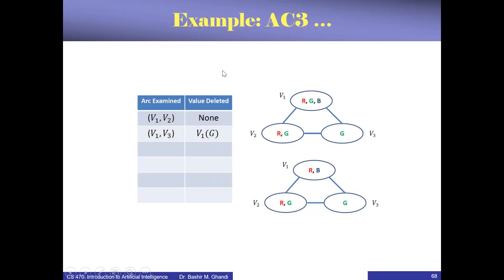AC3 stores all three arcs — (V1,V2), (V2,V3), and (V1,V3) — in the queue and dequeues them one by one, checking for inconsistency. Suppose we dequeue arc (V1,V2): if we take any value in V1's domain, can we find a corresponding value in V2? Yes — if we take R we can get G, if we take G we can take R, if we take B we can take R or G. So nothing is deleted from V1 based on this arc. Now suppose we dequeue arc (V1,V3): if you take G in V1, you cannot have G in V3, so G must be removed from V1's domain.